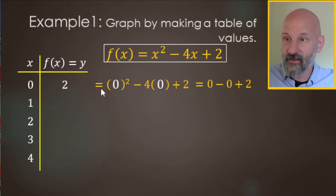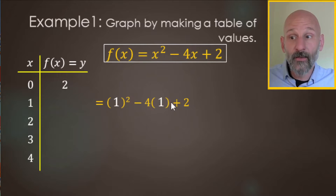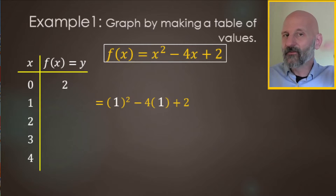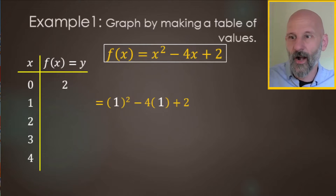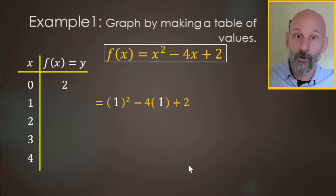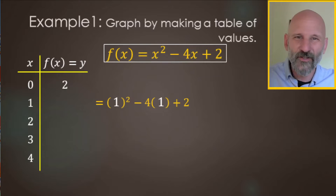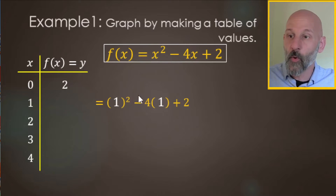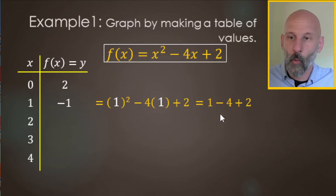For the next row, we put ones in for x, giving us one squared minus four times one plus two. Regarding the parentheses in PEMDAS — these are multiplication parentheses, not grouping symbol parentheses. So: one squared is one, minus four times one is four, plus two. That gives us one plus two equals three, minus four equals negative one.